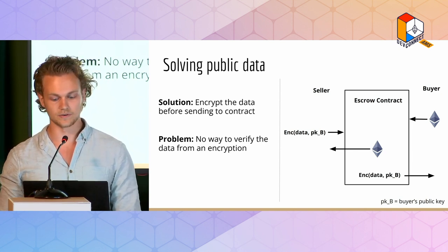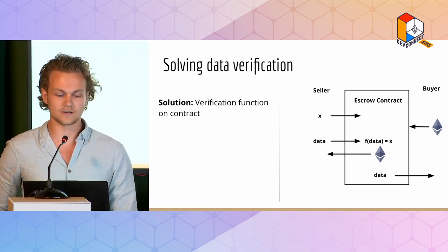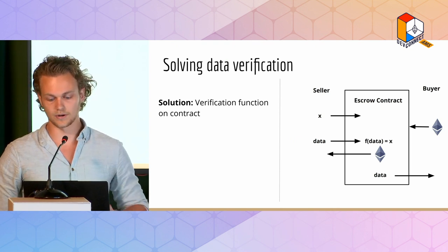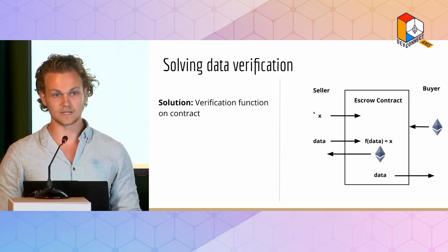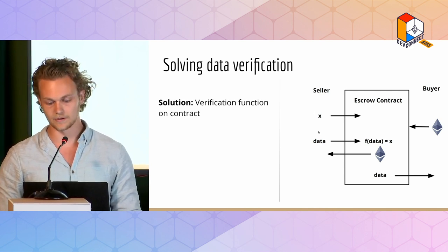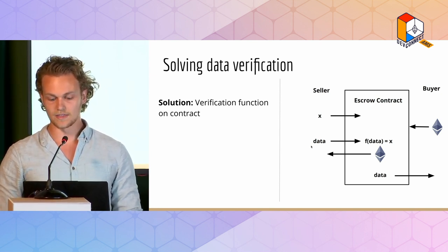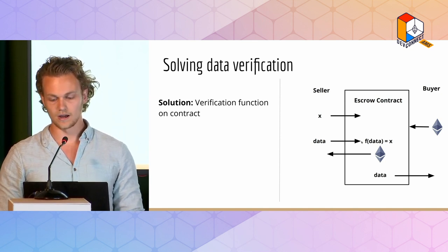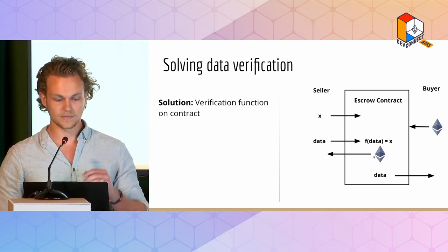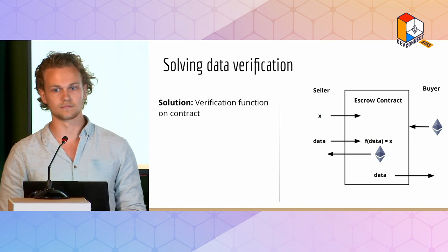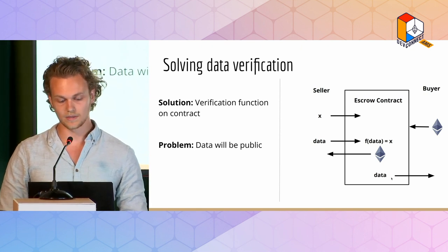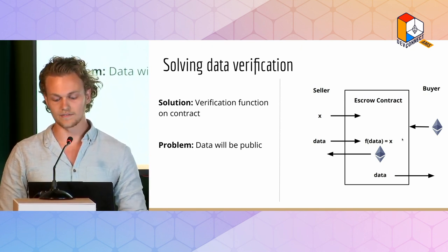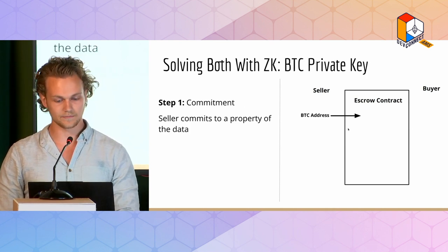If we wanted to solve the flip side, we could have a verification function on contract. We'll change the protocol a bit: we add a pre-commitment step where the seller says they're committing to sell some piece of data that has a mathematically provable property X. The buyer sends in escrowed tokens based on that attestation, and then the seller has to pass in the data, which is verified — only upon satisfying this condition can they retrieve the tokens. This solves our verification case, but now the data is entirely public. The only way to have on-chain verification is that the data is public to everyone, not just the buyer.